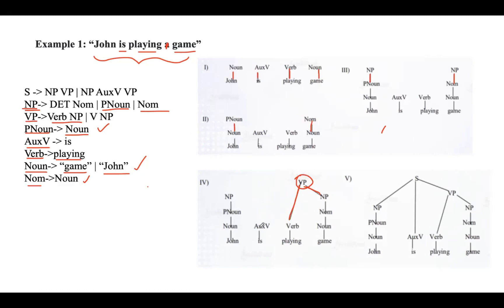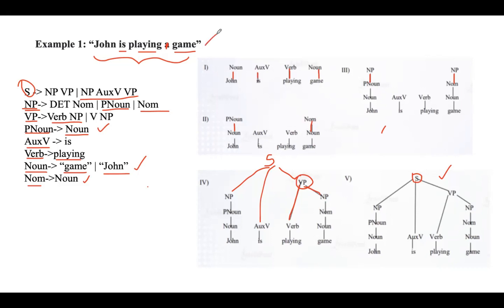Replace Verb and NP with VP, and Auxiliary Verb still remains. NP alone cannot be replaced with anything. In the next step, VP, Auxiliary Verb, and NP together — all three — exist in a production, so you can replace them with the start symbol S. This gives you the final parse tree. As we reach the start symbol, we can say the parsing is successful and we have reached our goal. This is the final parse tree obtained for the string 'John is playing game' using bottom-up parsing.